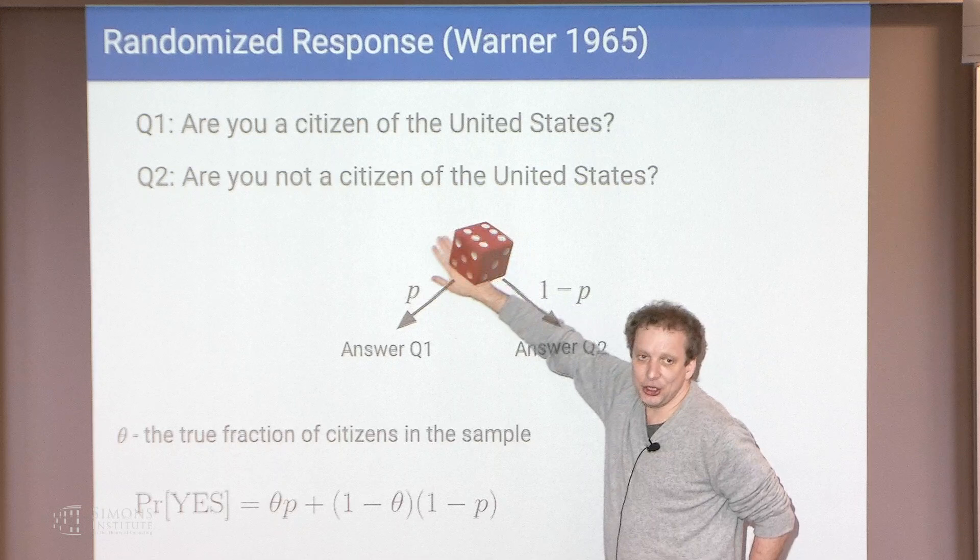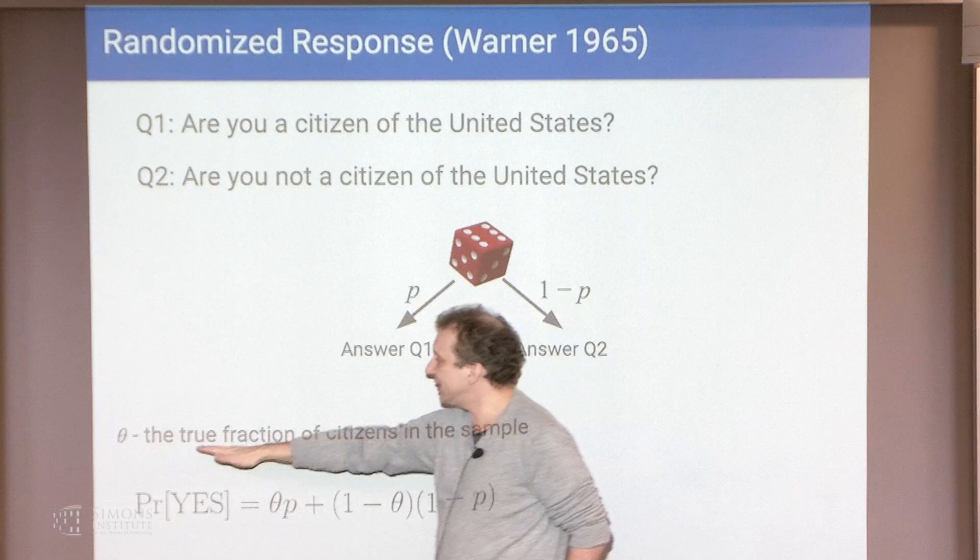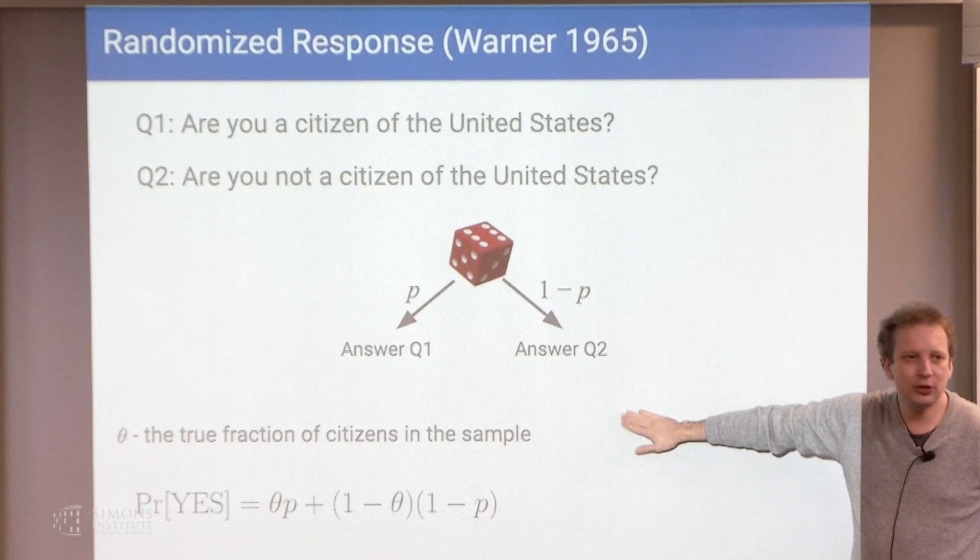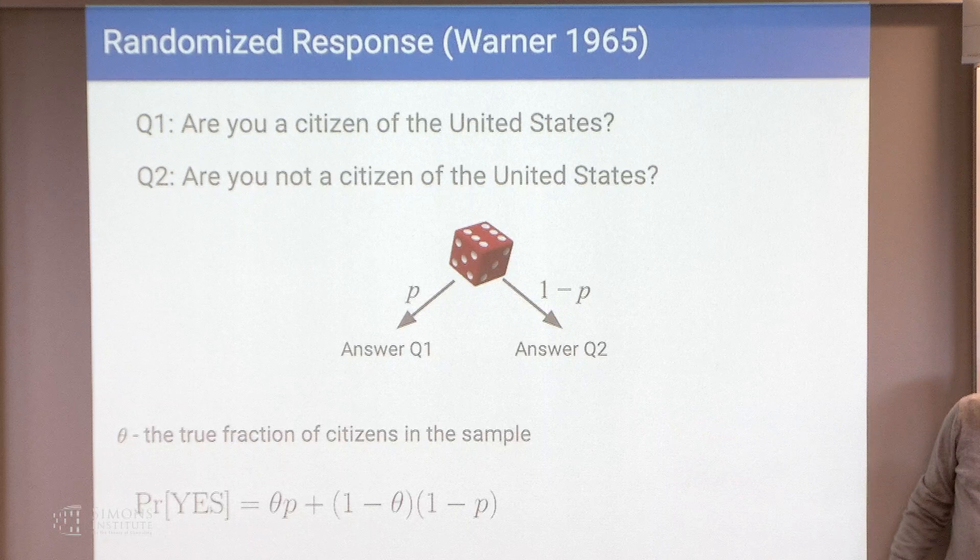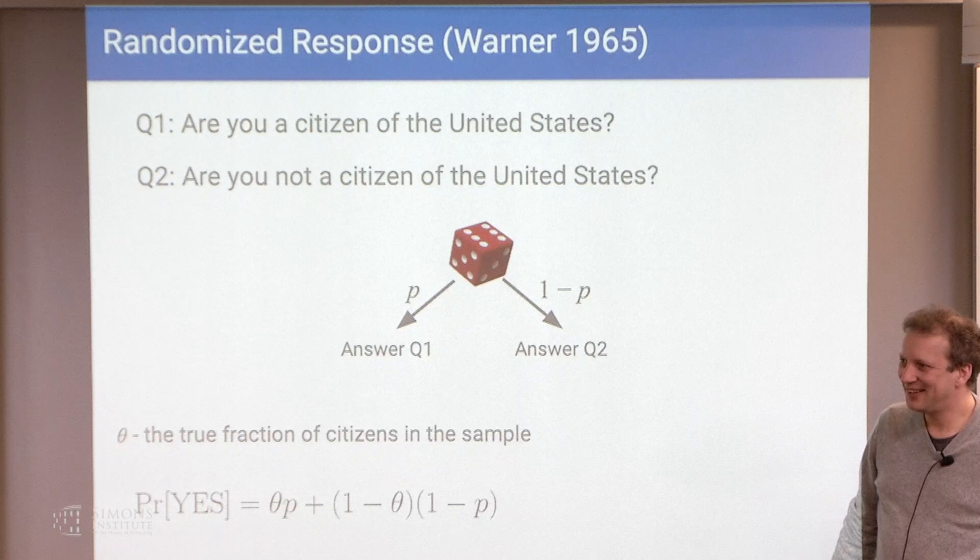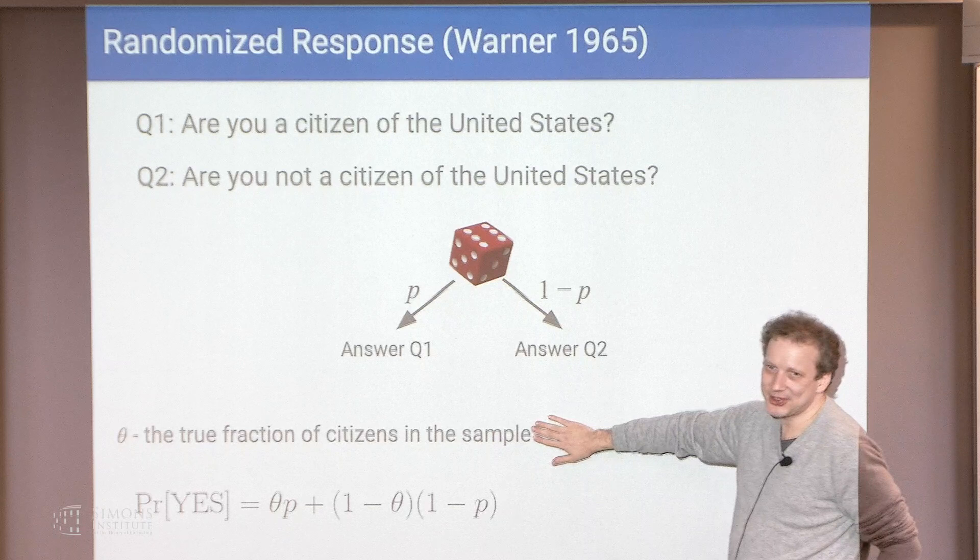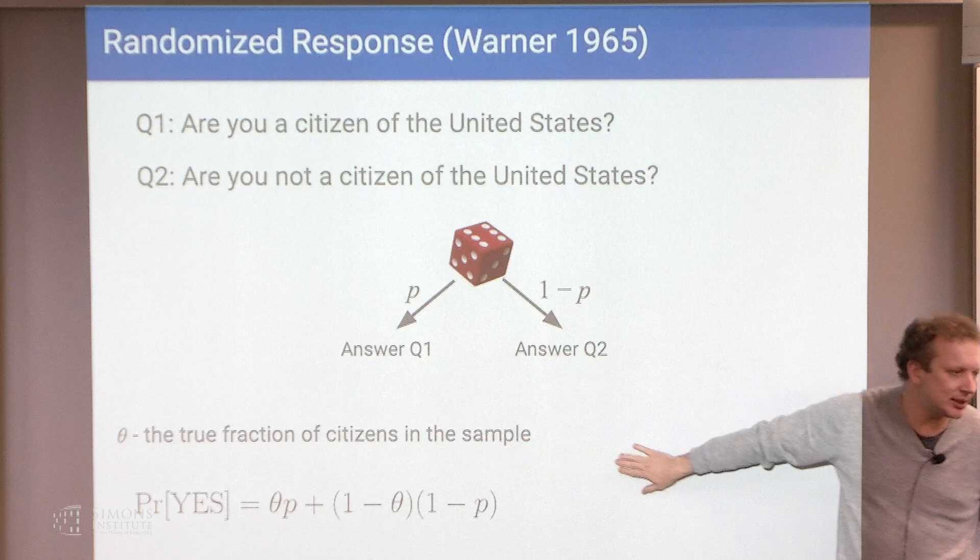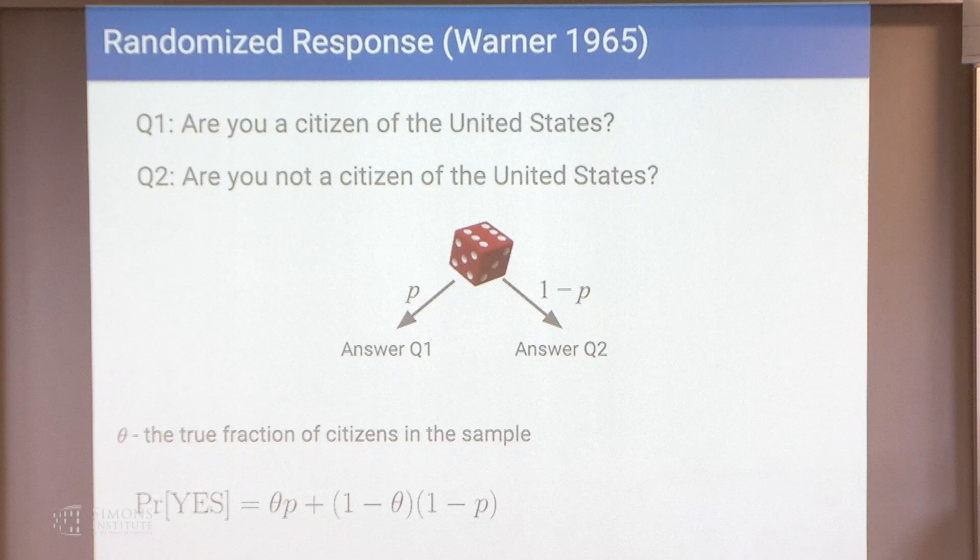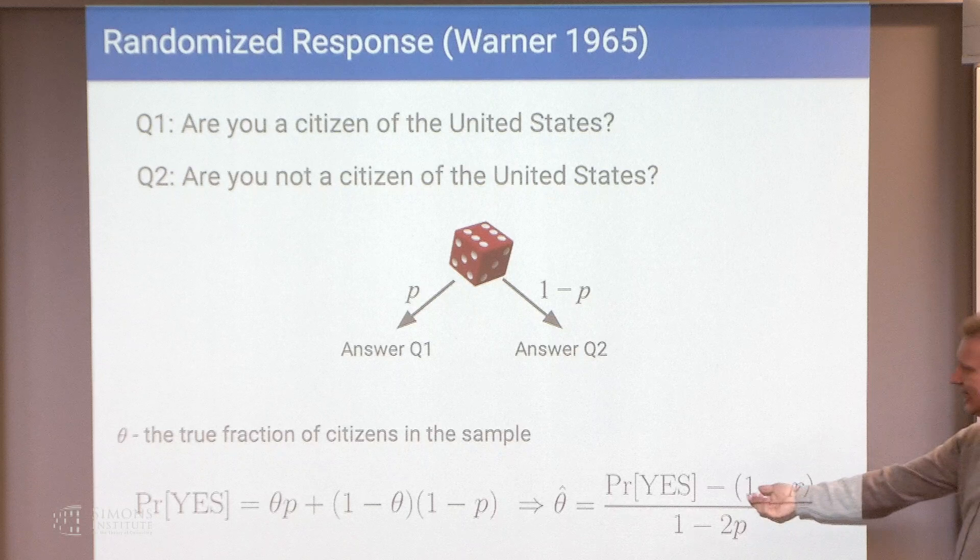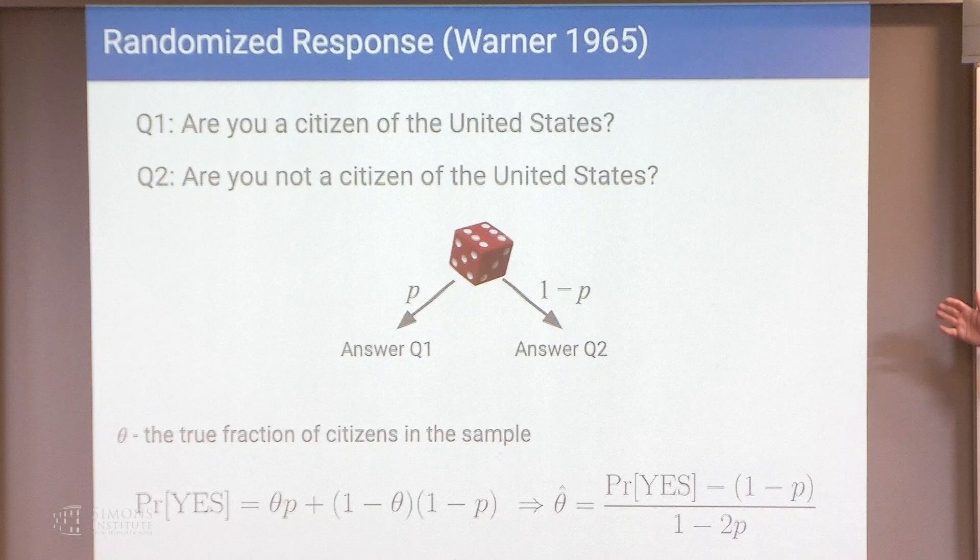To back out of the, so if each person follows this procedure and theta is the true fraction of people who are citizens in the sample, like by the way do you know what is the approximate number of citizens in this country? 300 million? Oh the percentage wise. True fraction of citizens yes. Among people living in the U.S. 90%. A bit less than that. 87%. So if theta is the actual fraction of citizens then and if each person follows this procedure then the fraction of the yeses will be given by this formula and from this you can back out an unbiased estimator for this fraction and you can compute all kinds of concentration bounds, the variance, et cetera.